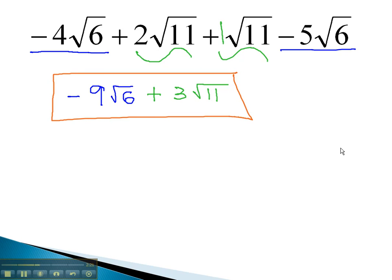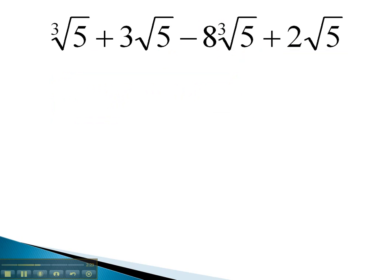Let's try one more example, this one with higher roots. In this problem, we've got 5 underneath every root. However, they are not like radicals.